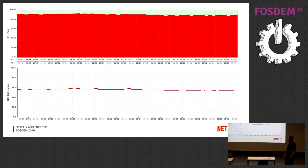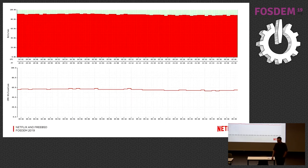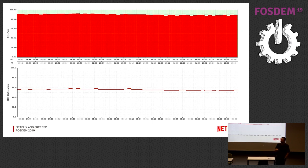Here are some graphs showing that: the bandwidth is hovering right around 90 gigabits per second and the CPU utilization is right around 55%. This is measured in an actual system serving production traffic — not a synthetic benchmark. This is what we get in production.